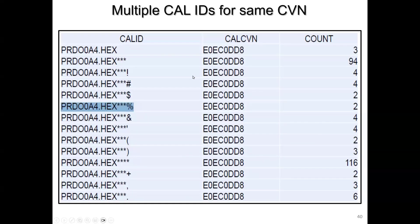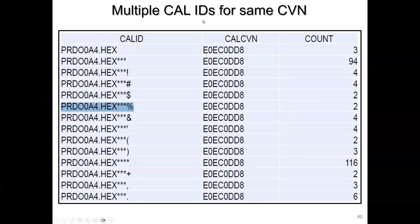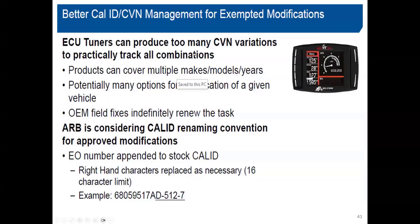We have the opposite case too — all these different controllers using the same CVN. That's not your responsibility, but these are the anomalies they have to deal with, where some vehicles may be pushed through and others may not. When you hear that CVN and Cal ID should be the same for that same part number — there's a couple of percent out there that make it not true.